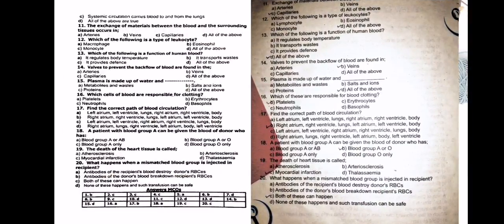Now MCQ number 13: which of the following is the function of human blood? Option A, it regulates body temperature — yes. It transports waste — yes. It provides defense — yes. Option D, all of the above — so the correct answer is option D. Moving on to MCQ number 18: a patient with blood group A can be given the blood of a donor who has blood group A and AB? No. Blood group A or O? Yes, this is the correct answer. Blood group A only? No. Blood group O only? No. The correct answer is B: A and O.